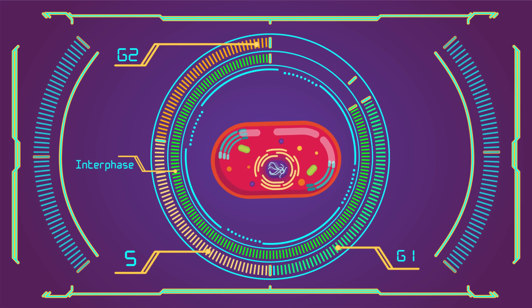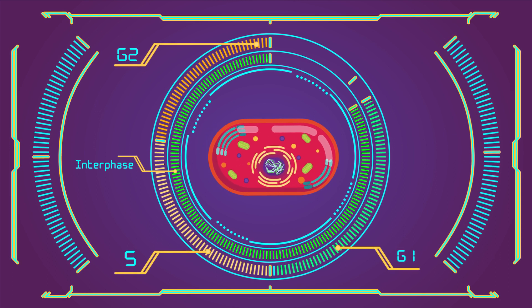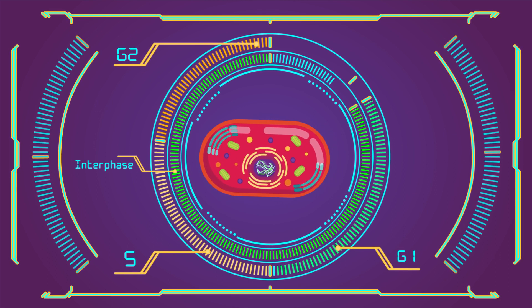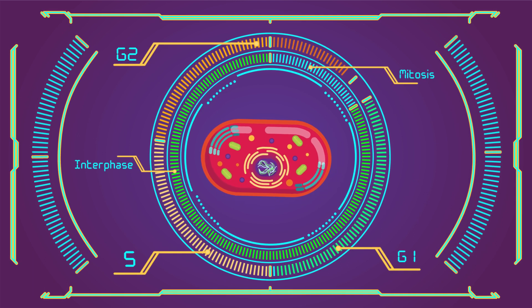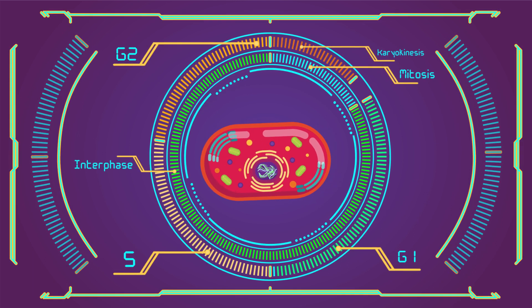After this phase comes mitosis, which is further divided into karyokinesis (division of nucleus) and cytokinesis (division of cytoplasm). Karyokinesis involves the four basic steps of mitosis that are prophase, metaphase, anaphase, and telophase.